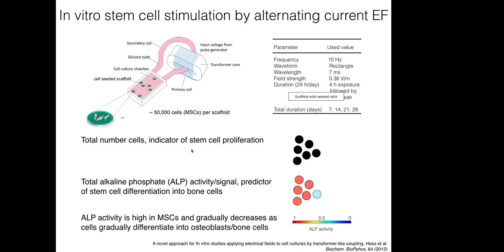To quantify cell proliferation, the total number of cells was counted at each of these time points. To quantify differentiation, the total ALP signal of the cells was measured — ALP is an enzyme produced by cells that are about to differentiate into bone cells.